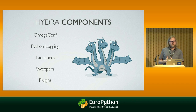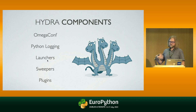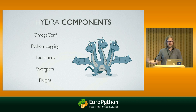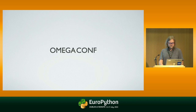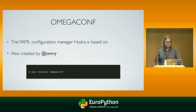Now I want to talk about how Hydra works and how its internals are organized. The components of Hydra are: OmegaConf, which I'll get to in a second; Python logging setup; launchers that start your jobs; sweepers that scan the different parameter spaces you define by providing names, values, or ranges for each parameter; and it's also a modular architecture that can be extended with plugins. OmegaConf is actually a separate package that Hydra is based on — it's the YAML configuration manager created by the same main author, Omri, who created Hydra, and you can install it from PyPI.